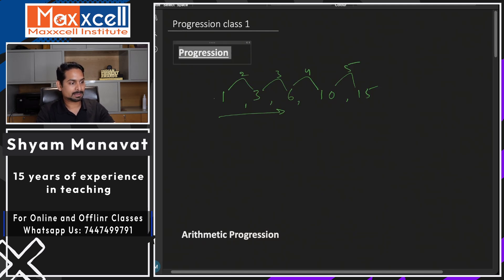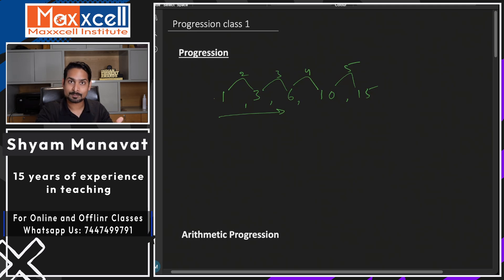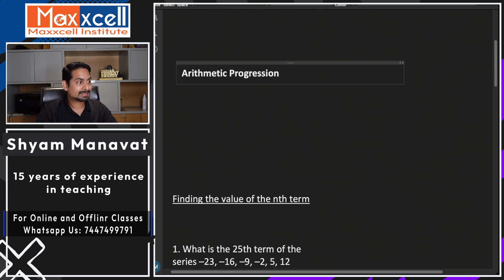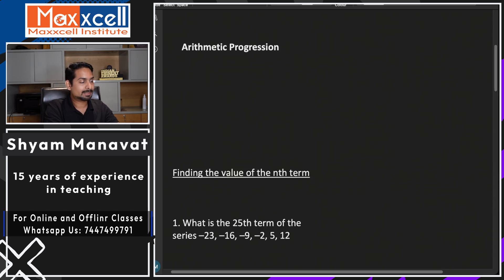I hope you understood the meaning of progression. Progression means the terms should have something common to find the next term — it could be a common difference, common ratio, or something common. We are going to discuss arithmetic progression in this lecture. Arithmetic progression has a specific property: it progresses with a common difference. For example, consider the series 2, 5, 8, 11, and so on.